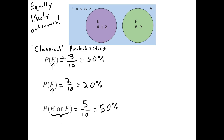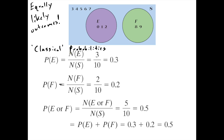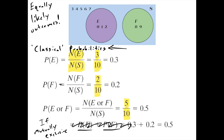For perspective, here's what these calculations look like using the book's notation. The book uses a capital N to denote counting the number of ways an event can happen divided by the number of possible outcomes. You do the same for F to find its probability, and then for E or F. There's also a formula for finding the probability of E or F when they're mutually exclusive, but for now let's just say all these things come from counting.